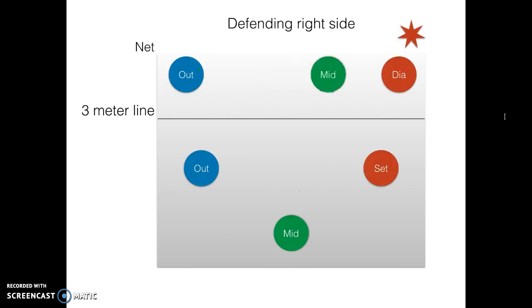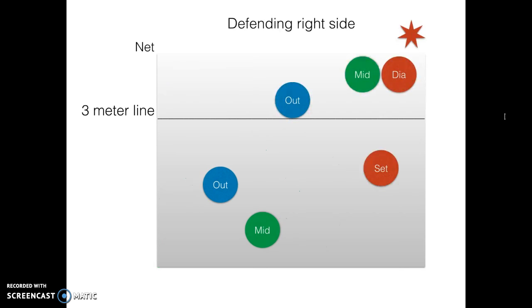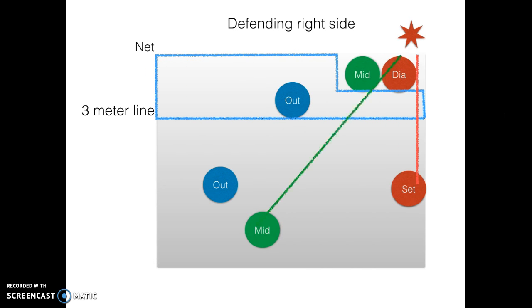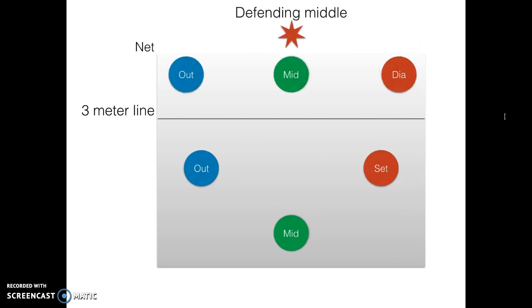So when you attack from the right side, it would be the same just mirrored, and as you can see, the same principle applies. Now when you attack from the middle, the attack is usually very quick and we can't move much, but there's a big spot where the opponent can tip the ball. In order to prevent that, the front players have to move in to prevent this, because the back players hold their ground to receive smashes.